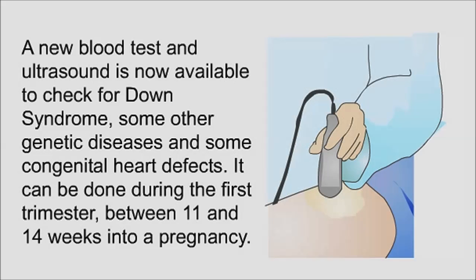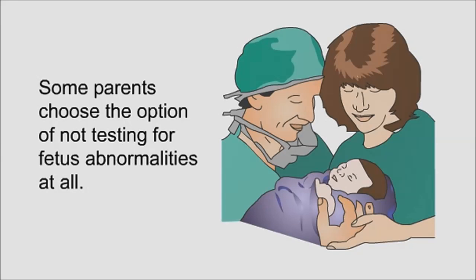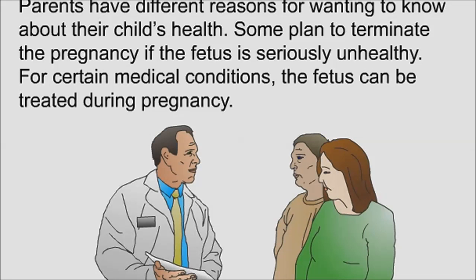A new blood test and ultrasound is now available to check for Down syndrome, some other genetic diseases, and some congenital heart defects. It can be done during the first trimester, between 11 and 14 weeks into a pregnancy. Some parents choose not to test for fetal abnormalities at all. Some plan to terminate the pregnancy if the fetus is seriously unhealthy, while for certain medical conditions, the fetus can be treated during pregnancy.